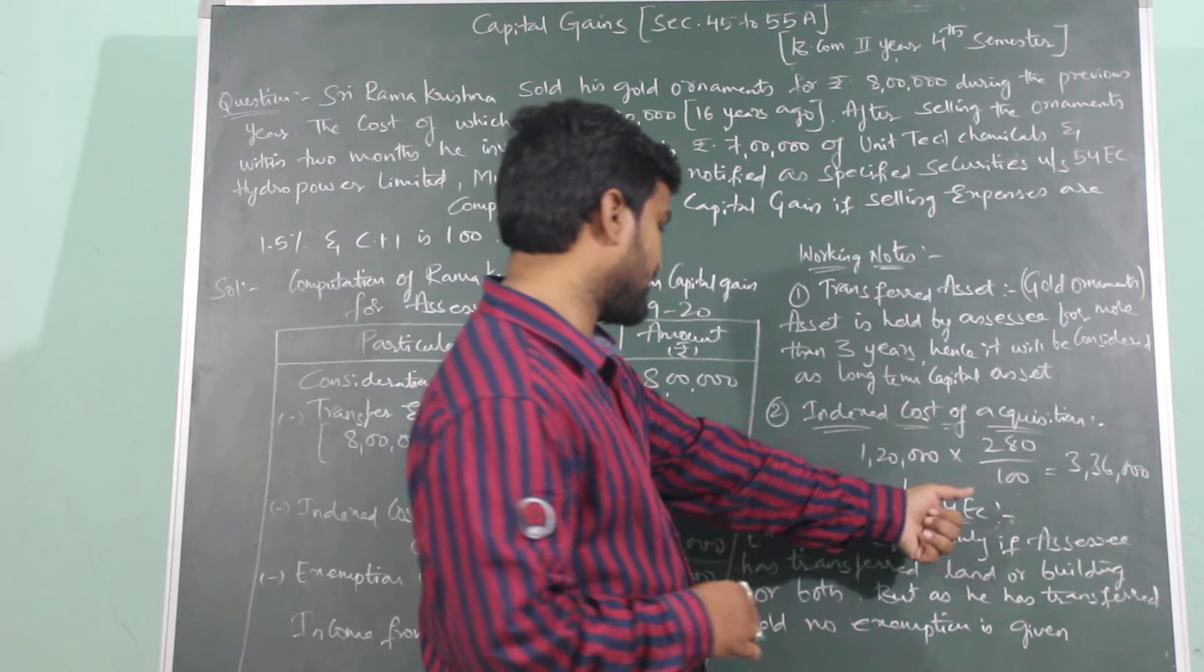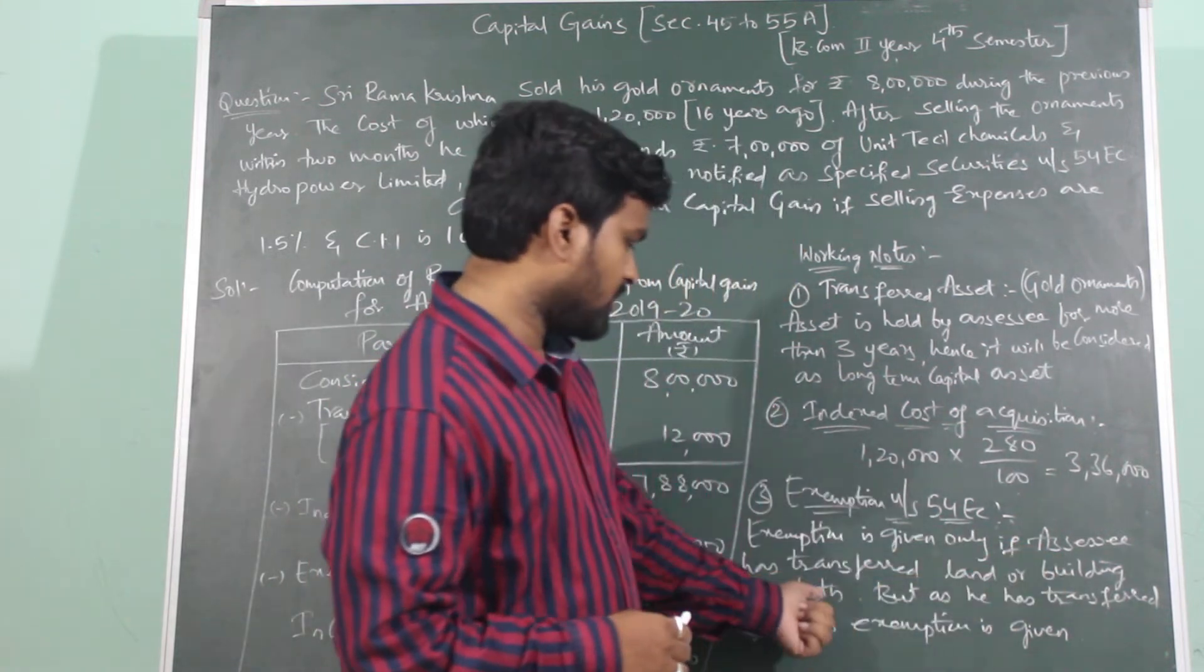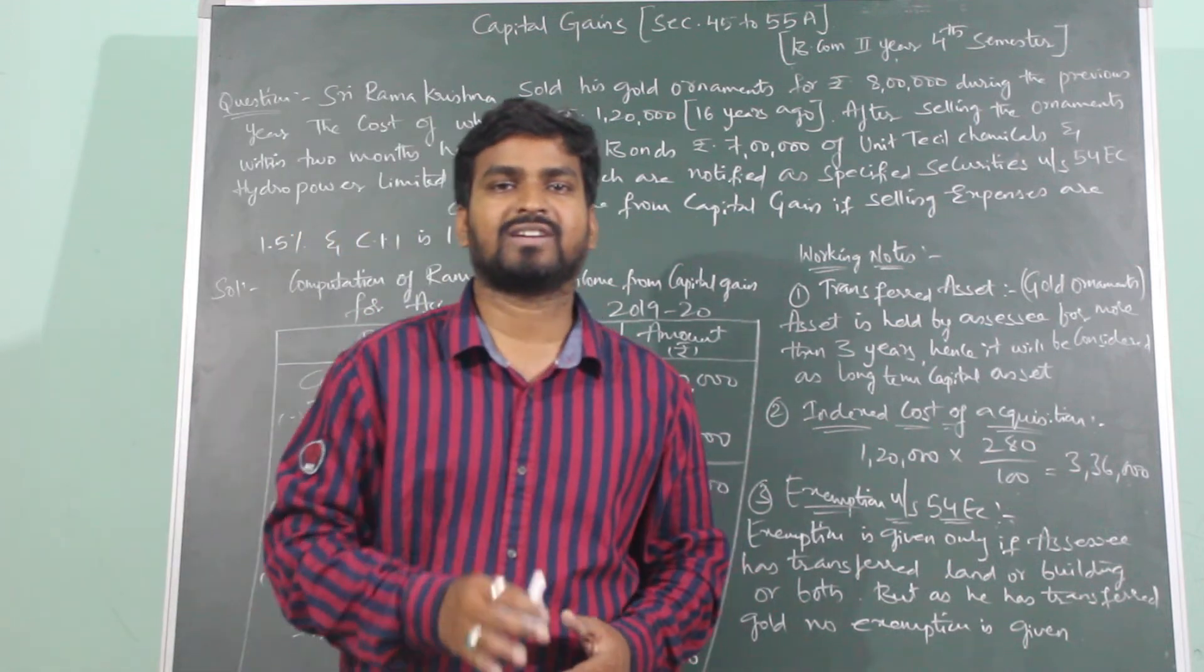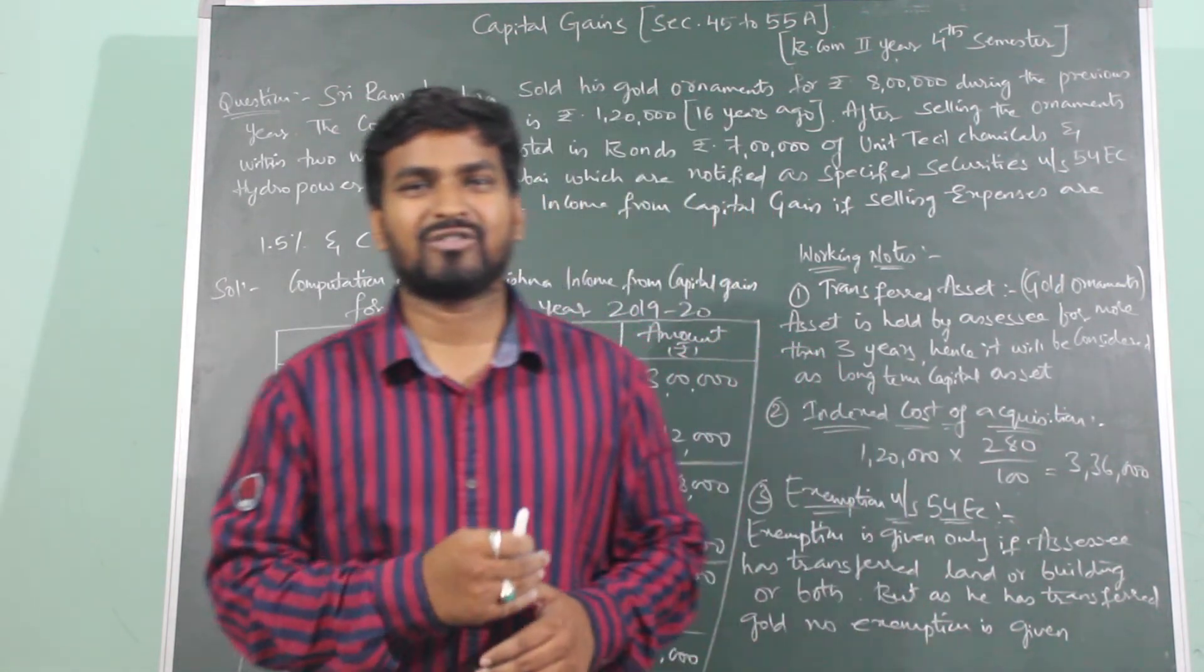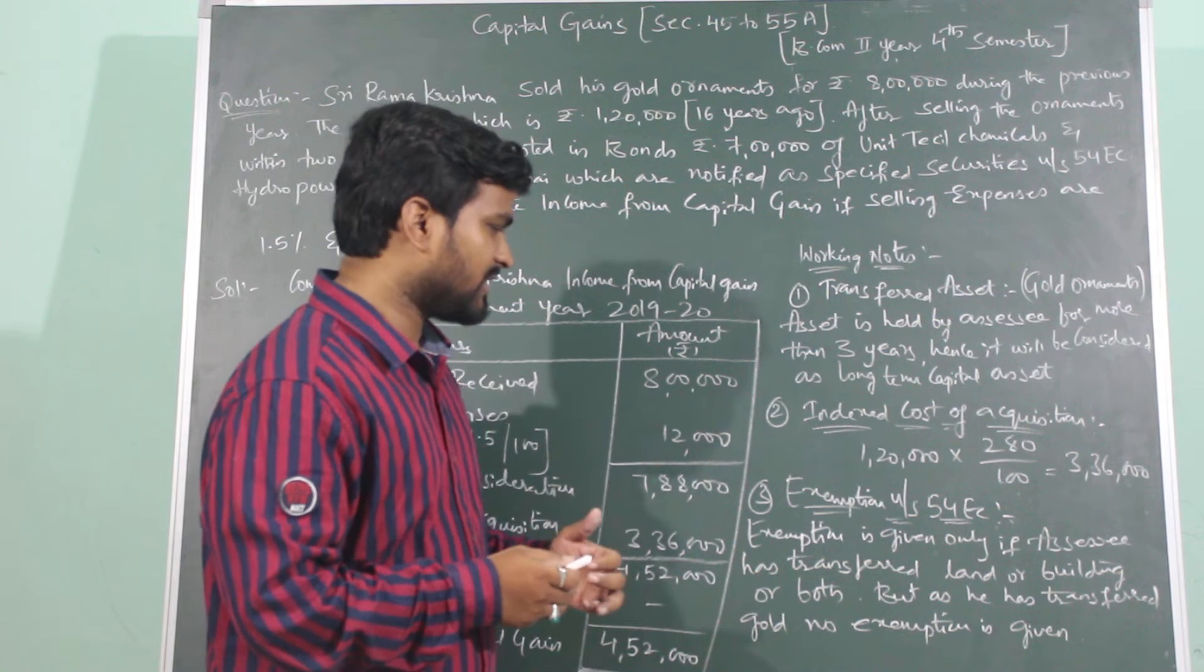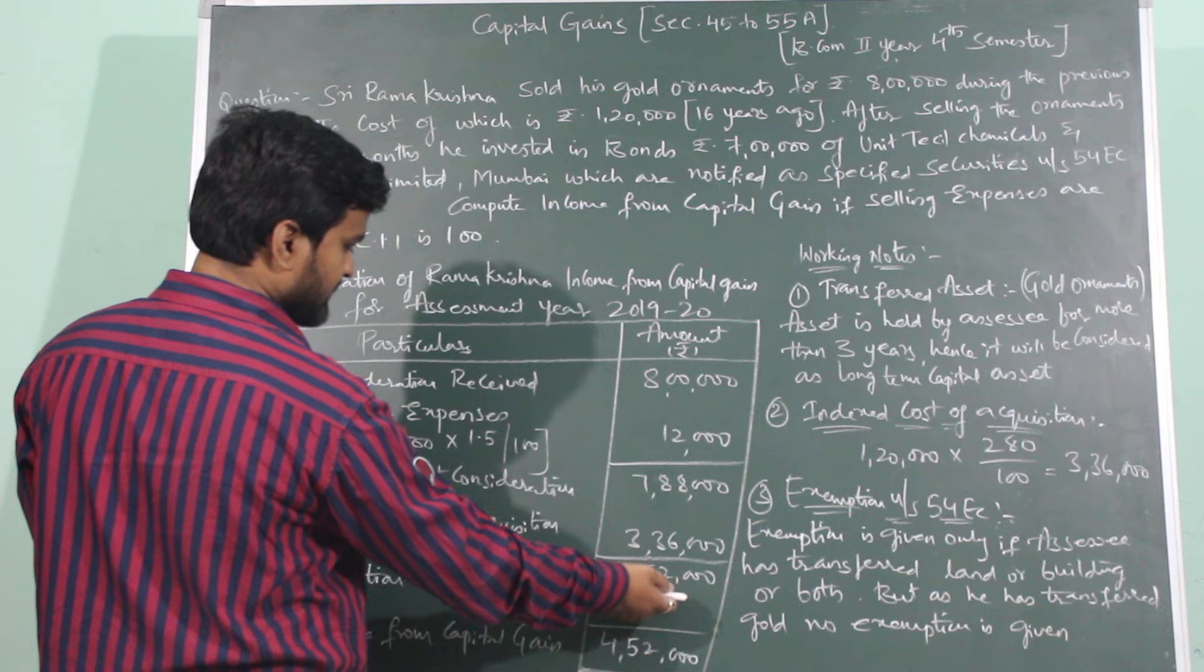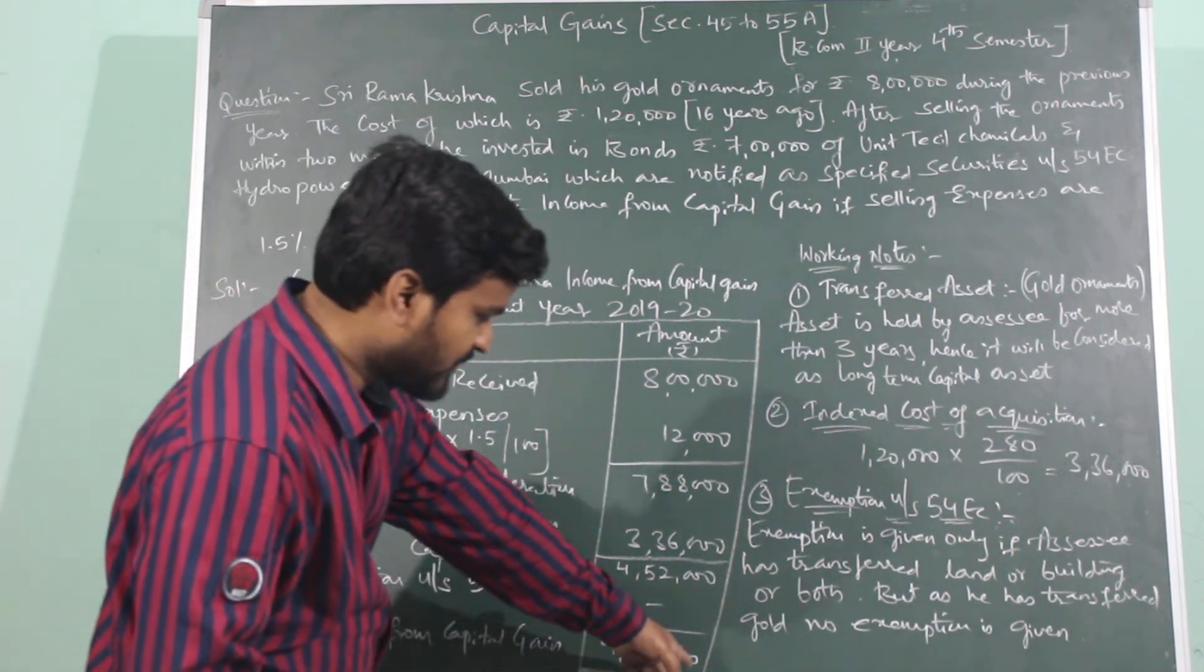Exemption under section 54 EC is given only if the assessee has transferred land or building or both. The assessee should sell either land or building or both. Agar assessee ko exemption hona hai section 54 mein then he should sell land, zameen bechna, building bechna ya phir dono bech sakte. But is question mein assessee kya beche? Gold ornaments beche. Hence he will not be allowed any exemption. He is not eligible for claiming any exemption. As he has transferred gold, no exemption is given. To yahaan pe is bande ko section 54 ke hisaab se kuch exemption mil raha? Nahi. Then his complete income 4,52,000 is taxable income, that is income from capital gain is 4,52,000.